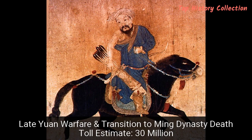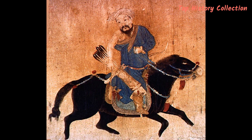Number 9: Late Yuan Warfare and Transition to Ming Dynasty – Death Toll Estimate: 30 Million. The Yuan dynasty was founded by Kublai Khan, grandson of Genghis Khan, around 1260. Yuan literally translates as 'great as the heavenly and primal,' though there proved to be nothing either great or heavenly about it. The dynasty turned out to be one of the shortest-lived in the history of China, covering just a century until it fell in 1368.